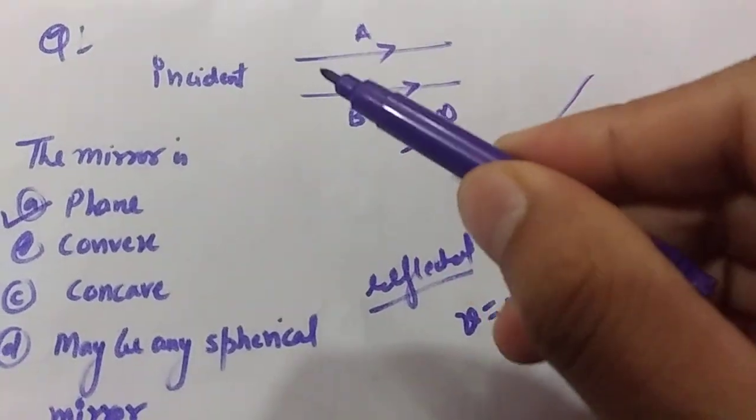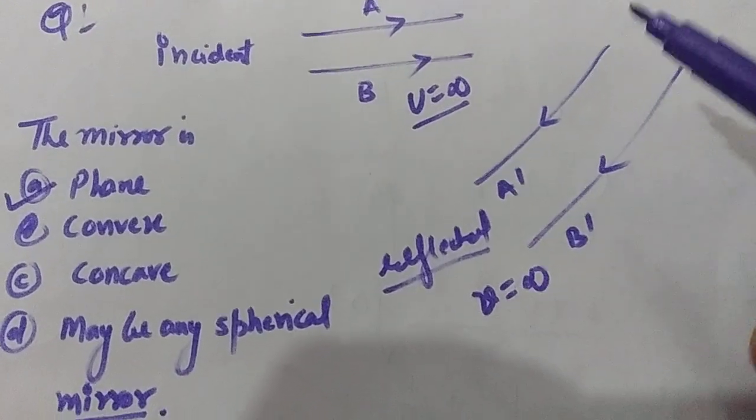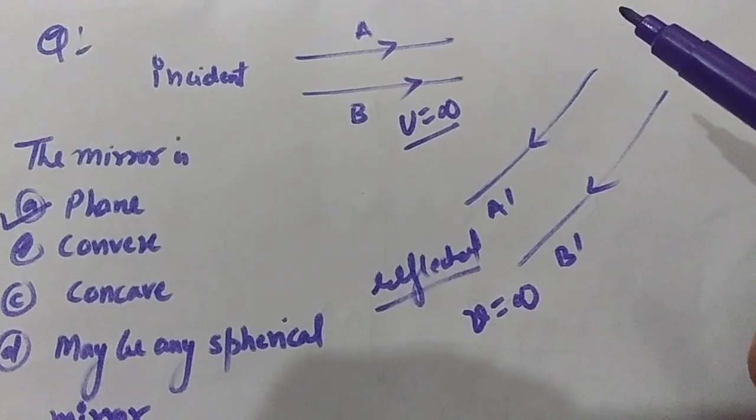This mirror is plane because incident rays are coming from infinity and are also going to infinity—they are parallel. So plane mirror is the answer for this question. Thank you.